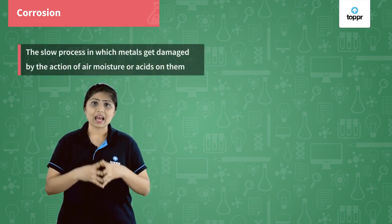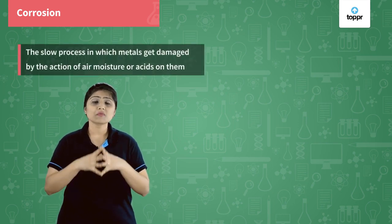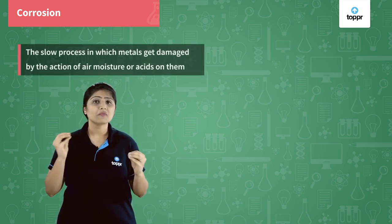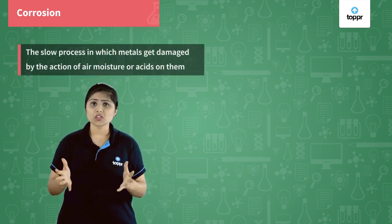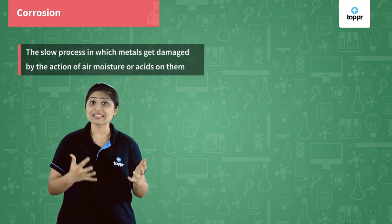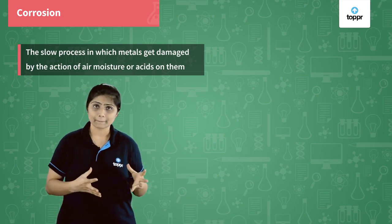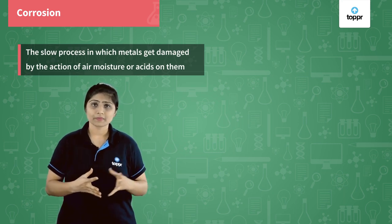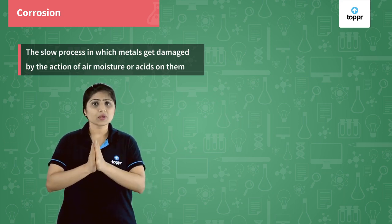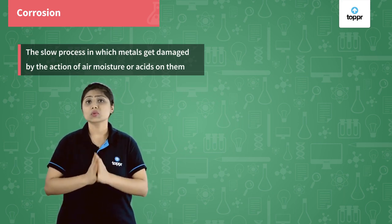Metals get damaged because of the action of air, moisture, or acids on them. This is what we call corrosion.